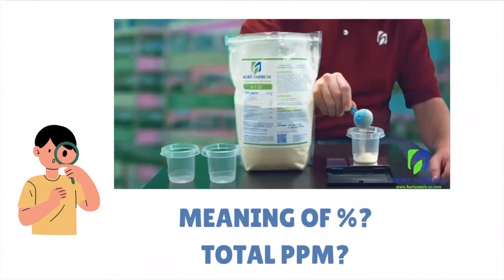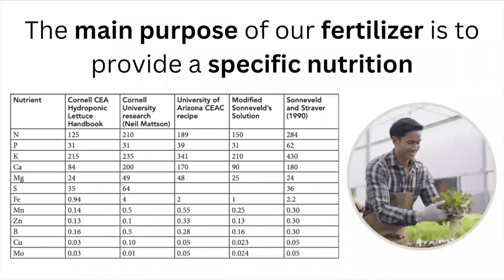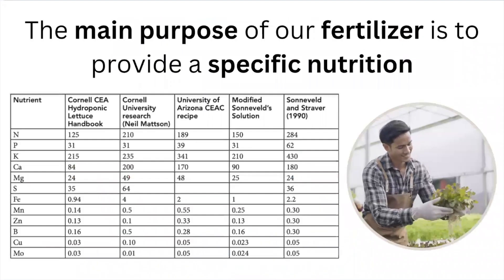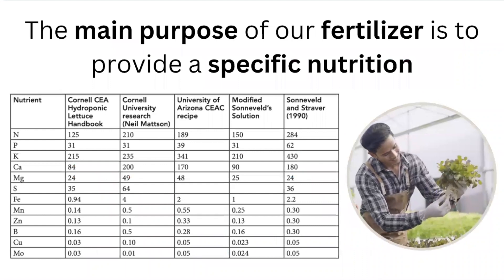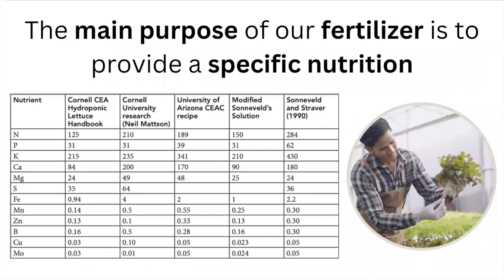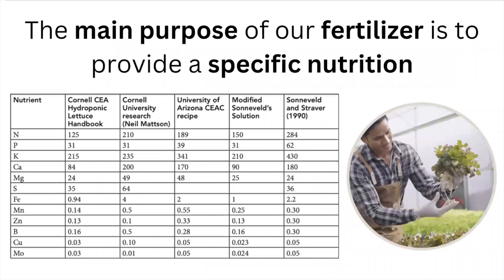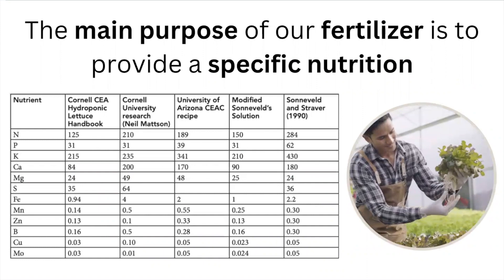When we buy fertilizers — mixed or compounds — we always get a label showing a percentage. But how can we relate that percentage to the total PPM that we're delivering to our plants with our fertilizer? When trying to maintain good nutrition, we should always have a target PPM for each nutrient for a specific crop.